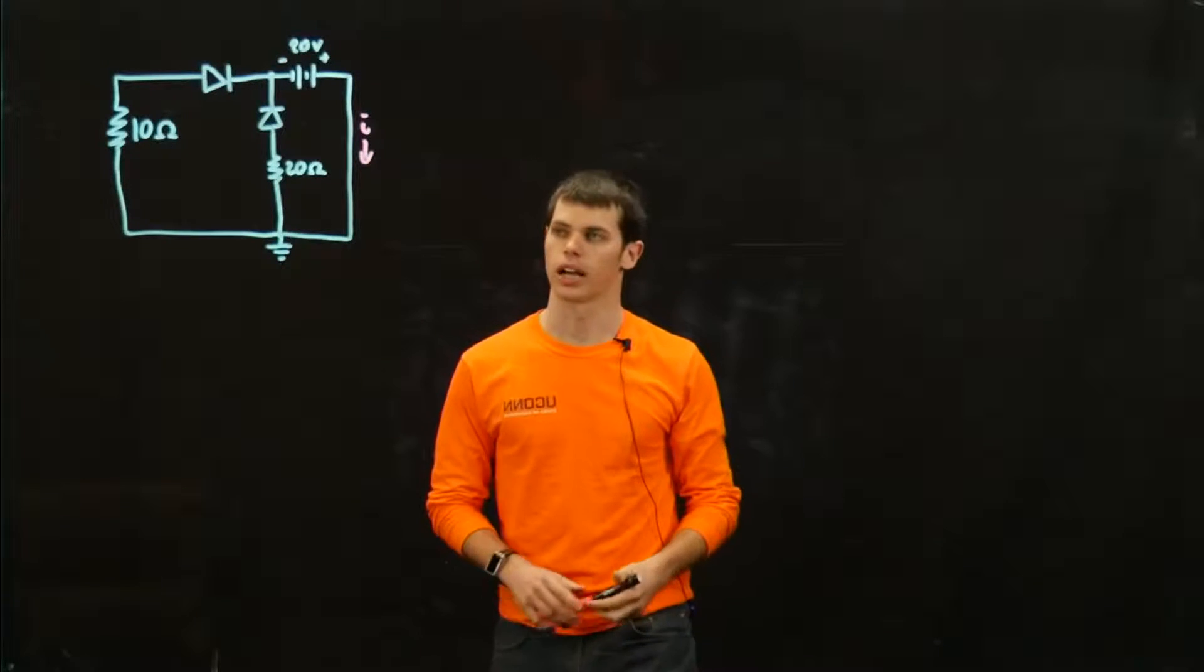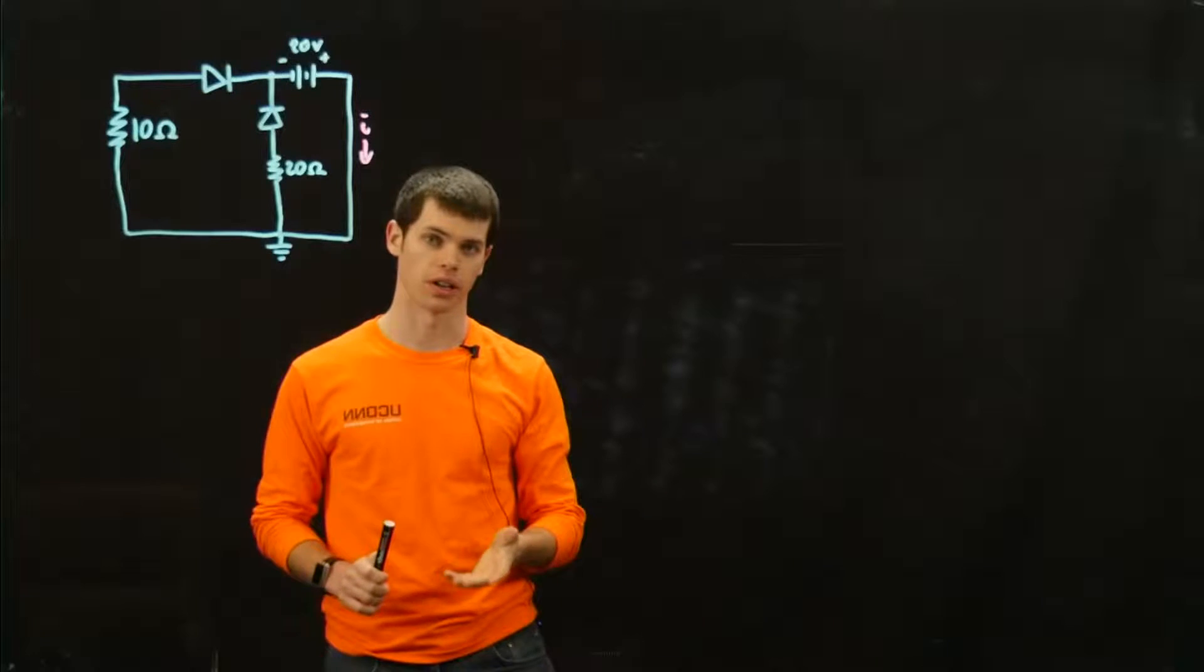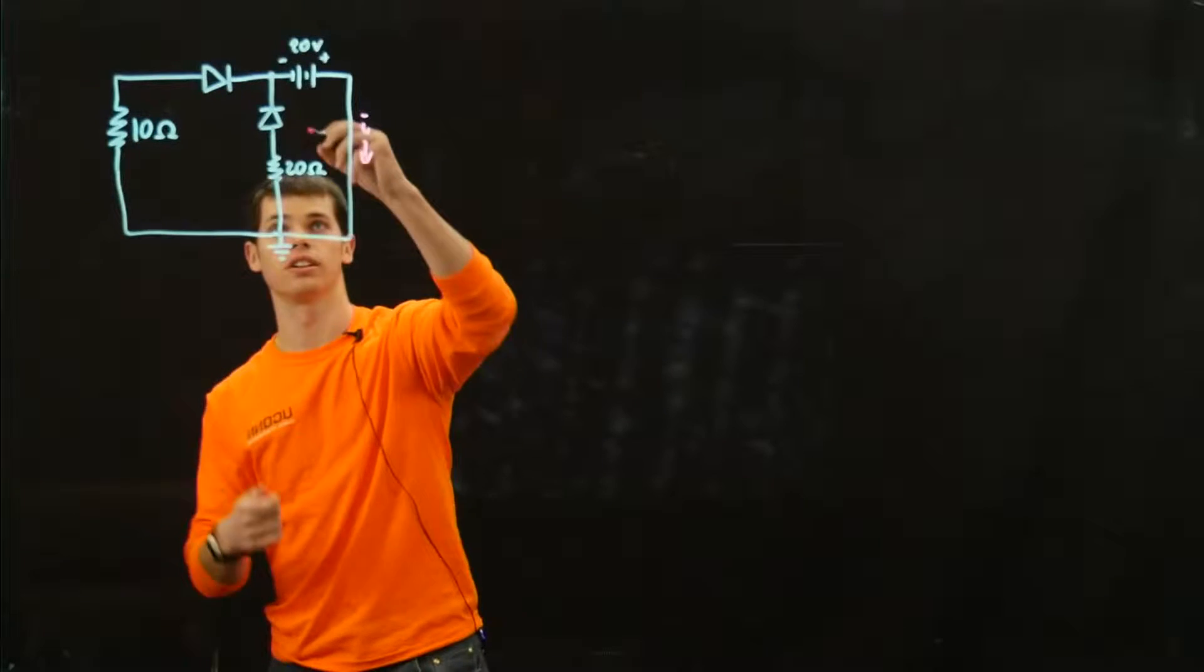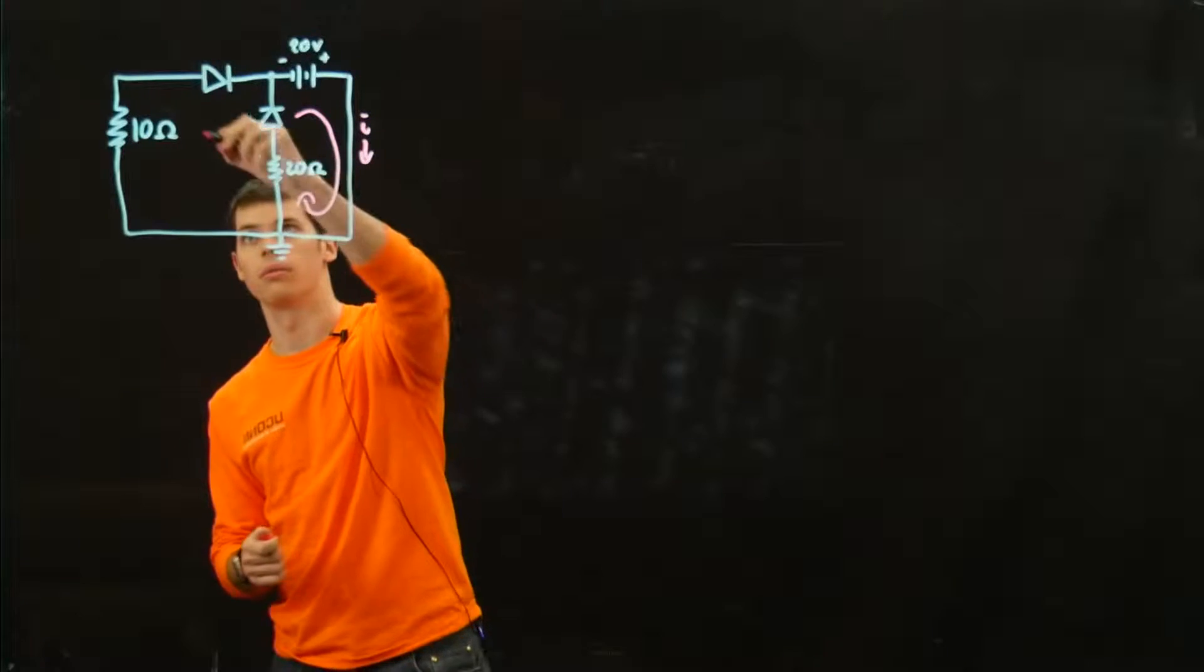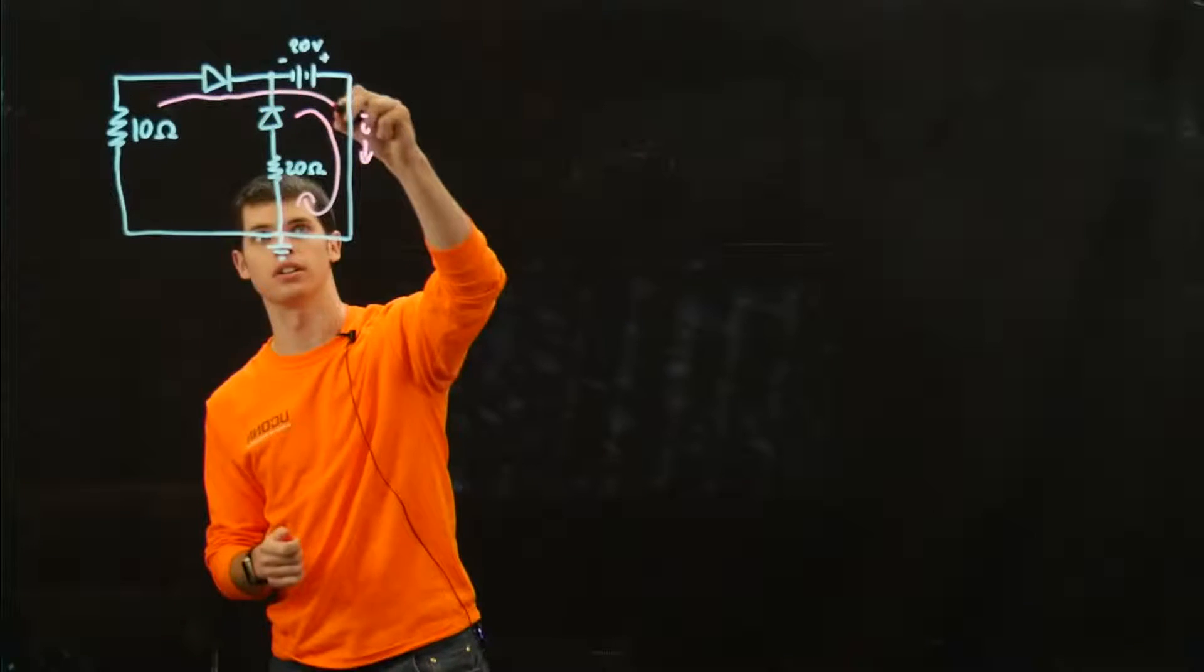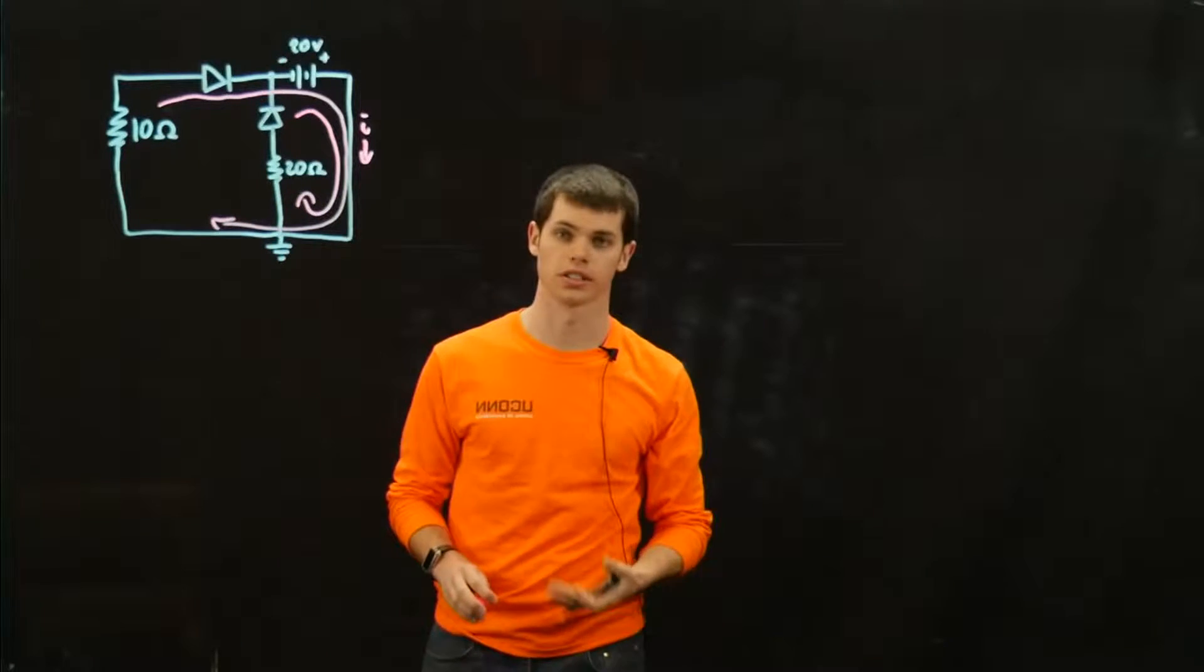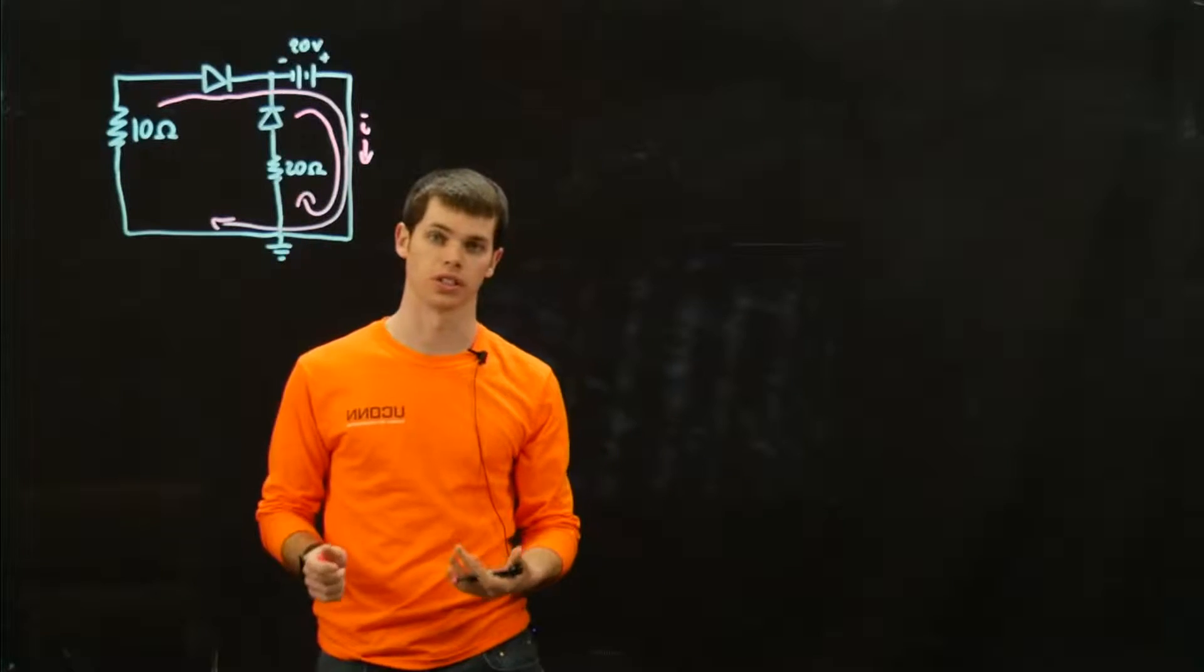So it's going to make things a little bit more complicated. For this, we're really going to want to use Kirchhoff's voltage law to be our best friend, because we can see here we have two loops, and Kirchhoff's voltage law states that for any given loop, the voltages have to equal zero.